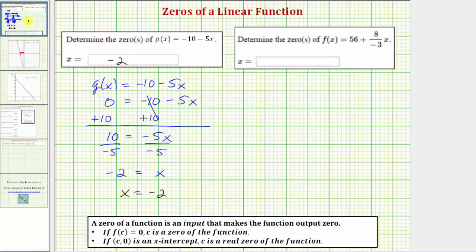Now let's look at our second example. Given the function f(x) equals 56. Notice how here we have plus and then a negative fraction. Let's just write this as minus eight-thirds x. Now to find these zeros, we set f(x) equal to zero and solve for x. So we have zero equals 56 minus eight-thirds x.